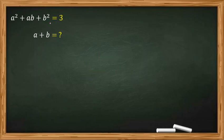Okay, a squared plus ab plus b squared equal to 3, a plus b is what? And we know that a and b in this problem are integers.